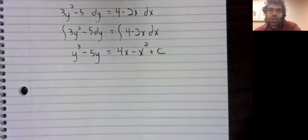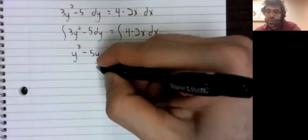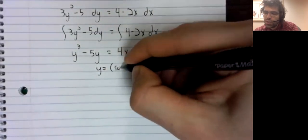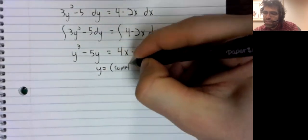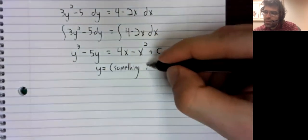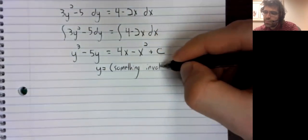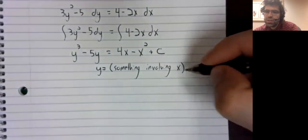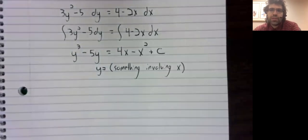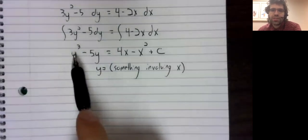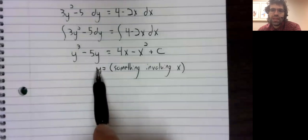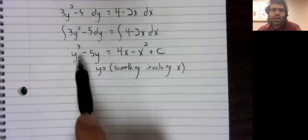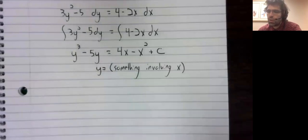Now here we sit. What we'd ideally like is y equals something involving x, but we can't achieve that — there's no way to combine these terms to isolate a single y.